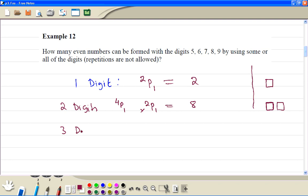If we choose 3 digits, again, the last digit we have 2 choices, 6 and 8. Then we have to fill the other 2 places. So we have 4 letters and we have to fill 2 positions, so that will be 4p2 times 2p1. So this is 12 times 2 is 24.